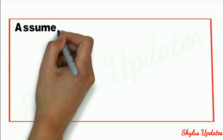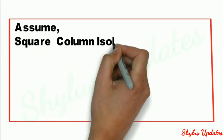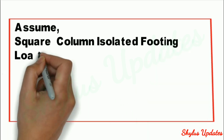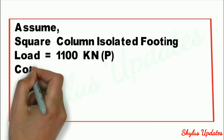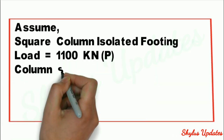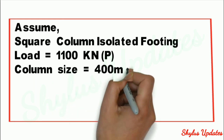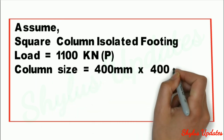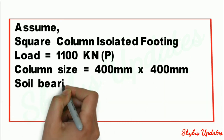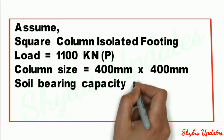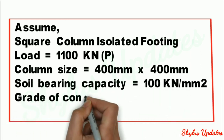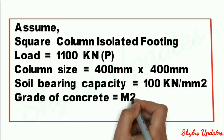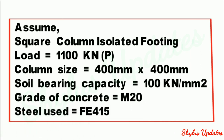Let us assume a square column isolated footing. The column load is 1100 kN and the column size is 400 mm × 400 mm. The bearing capacity of soil is 100 kN per m². Grade of concrete is M20 and steel used is Fe415.